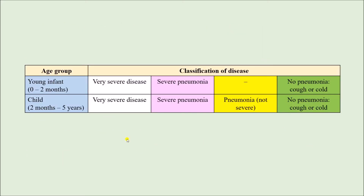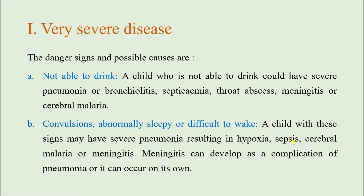First, very severe disease. We look for any of these danger signs. The child is not able to drink — this can indicate severe pneumonia, bronchiolitis, septicemia, throat abscess, meningitis, or cerebral malaria caused by falciparum malaria. There can also be convulsions, or the child may be abnormally sleepy or difficult to wake.